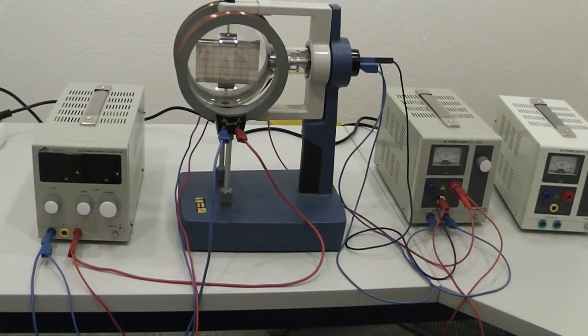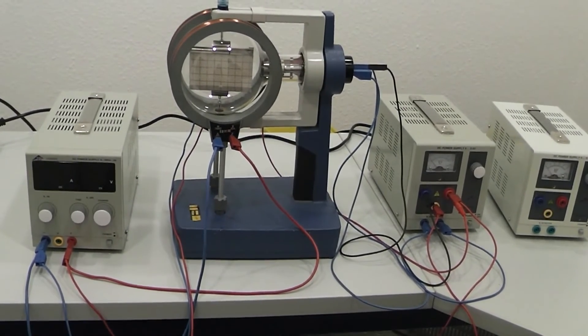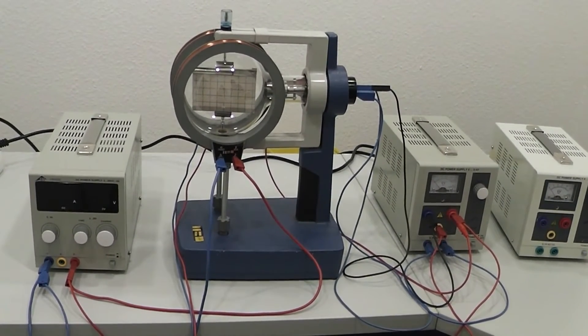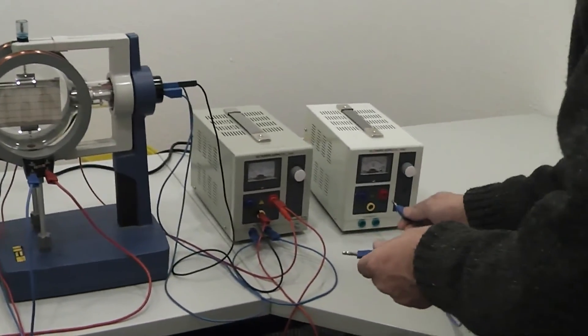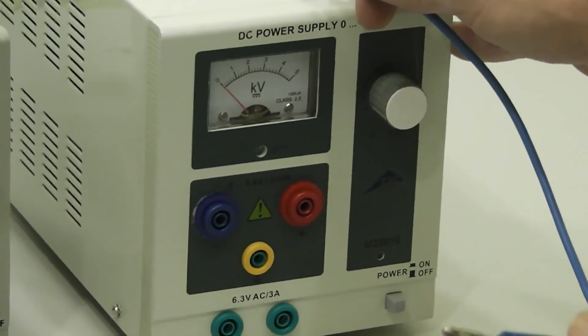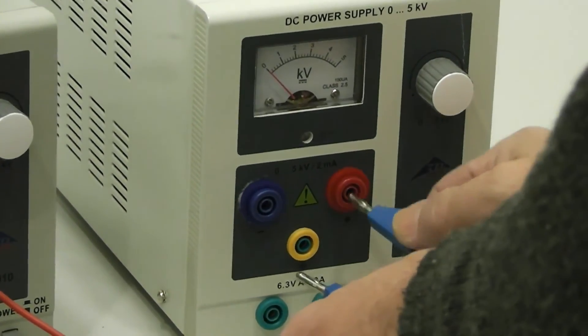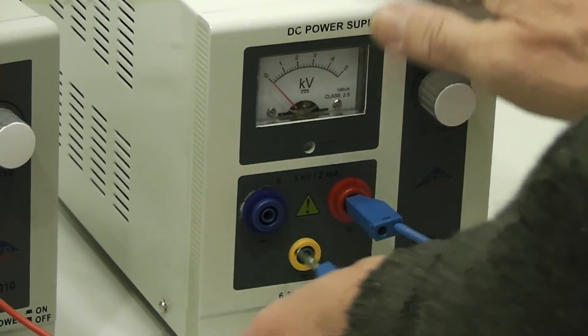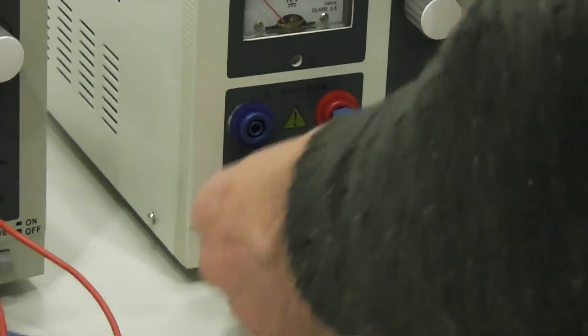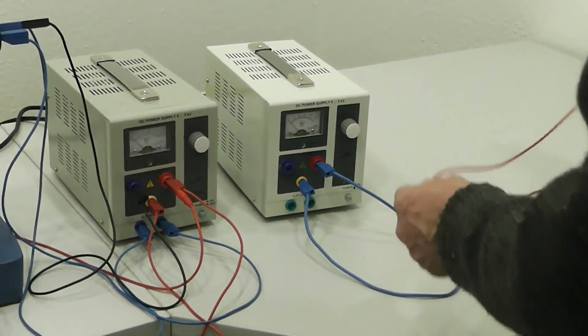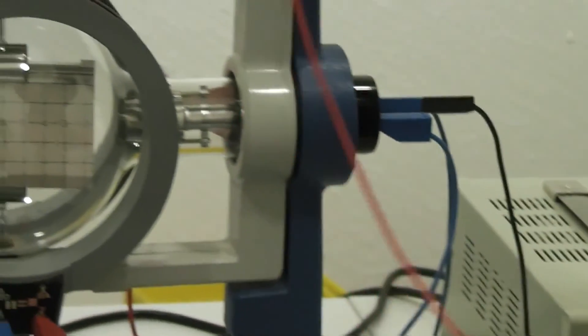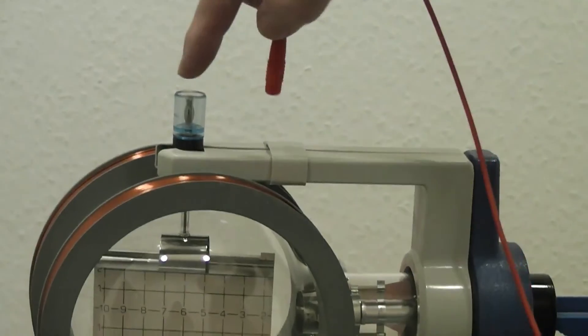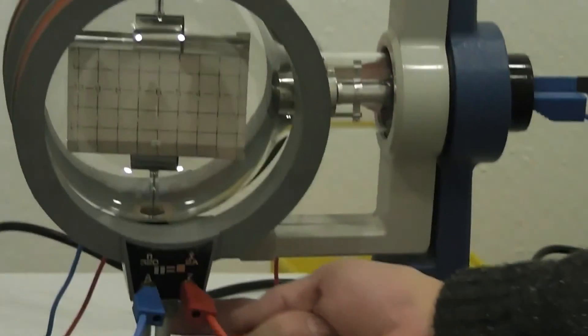Now we want to show you how to connect the tube if you want to do deflection by an electric field. First you need a second high voltage power supply. You put the anode on earth again. And then you see the connectors from the condenser plates up and down here.